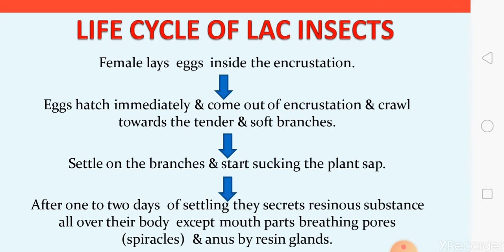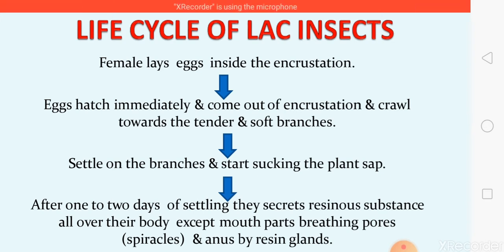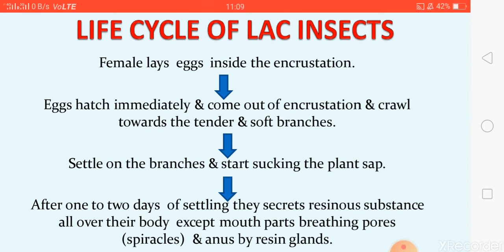As the insects grow, the secretion also increases, completely covering the insects and forming a globular cell. Initially, you cannot identify whether the incrustation is from a female or male. The insects go through molting for further development, and they molt three times to become adults.